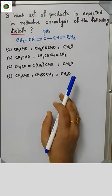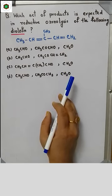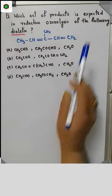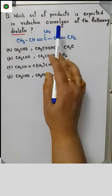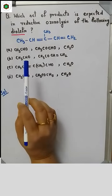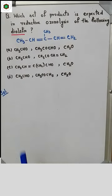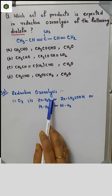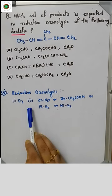Hello students, welcome back to Sir Prasayan. In this lecture I will explain which set of products is expected in reductive ozonolysis of the following diolefin. Diolefin means two olefinic moieties are present. For reductive ozonolysis, the reagent is number one ozone.